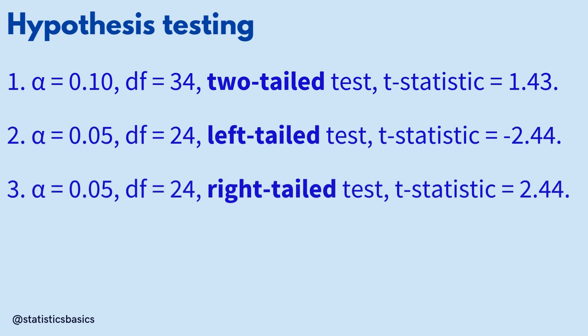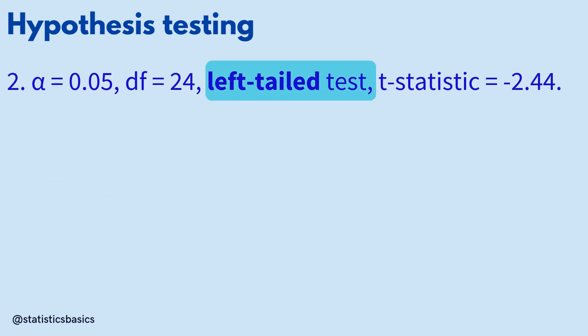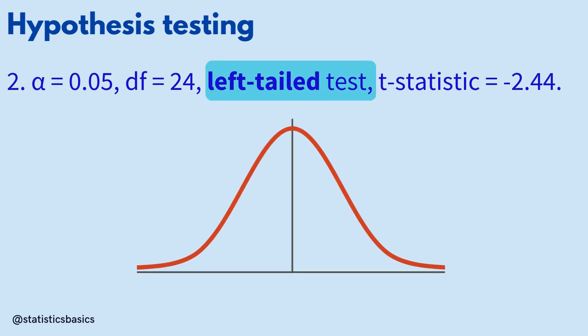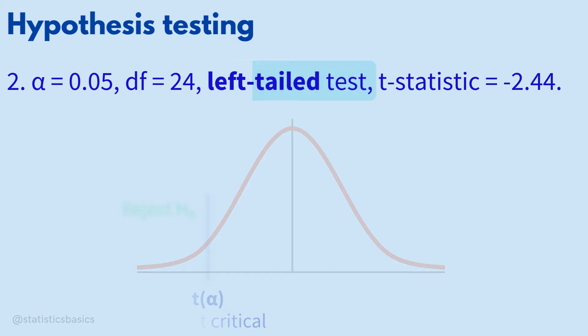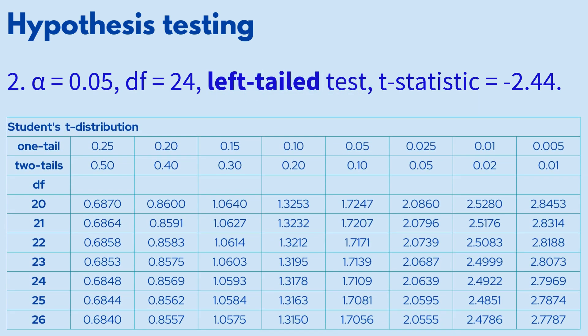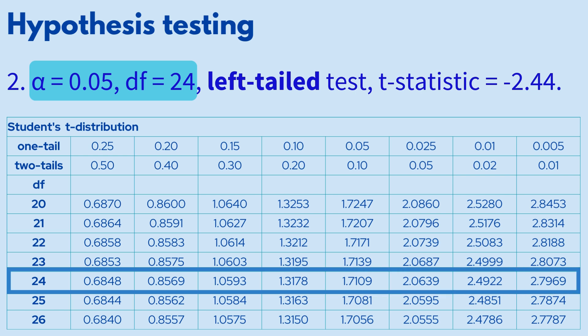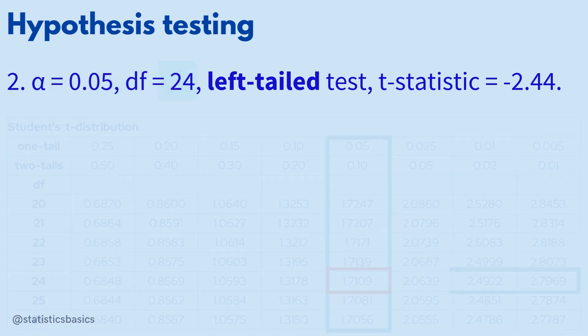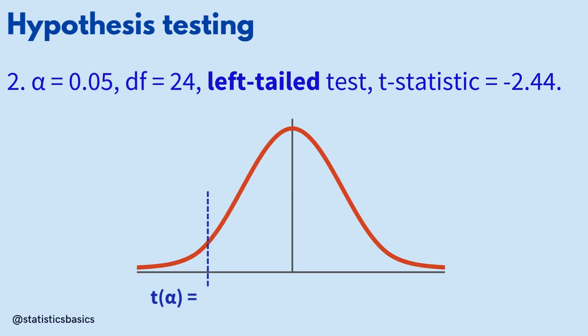In the second case, a left-tailed hypothesis test is conducted, meaning the rejection region lies below the lower critical value. In the t-distribution table, locate the row corresponding to 24 degrees of freedom and the column for a one-tailed significance level of 0.05. The resulting t-critical value is 1.7109. Since this is a left-tailed test, the lower critical value is minus 1.7109.